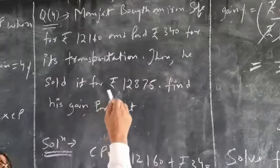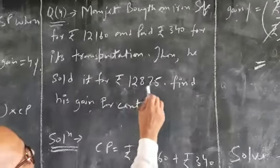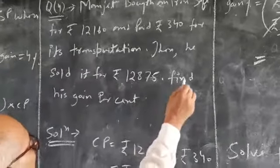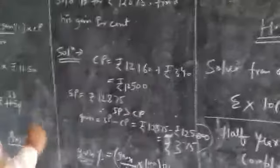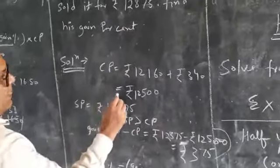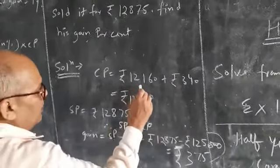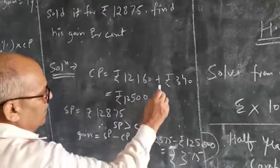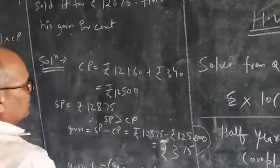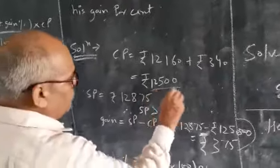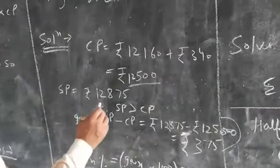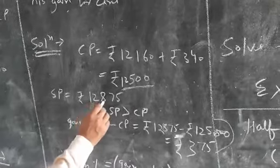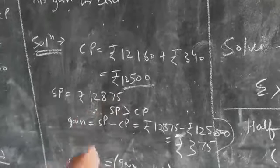Then he sold it for Rs. 12,875. Find his gain percent. Therefore, solution: CP equals 12,160 plus Rs. 340, that equals 12,500. SP equals Rs. 12,875. Therefore, SP is greater than CP.